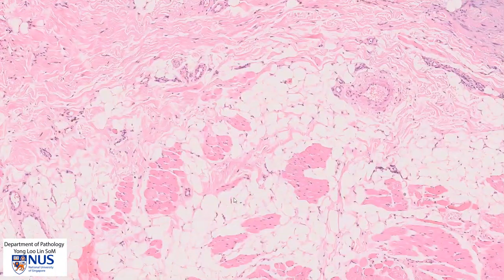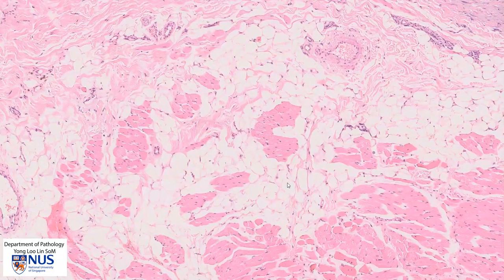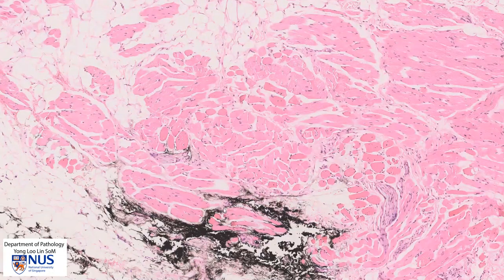Moving down we have the subcutis, which is composed of adipose tissue. There is also some skeletal muscle here, and this is not part of the skin.